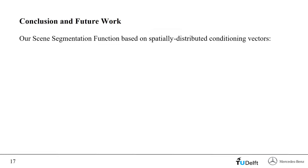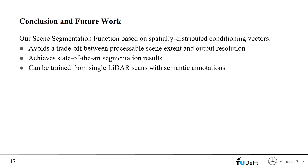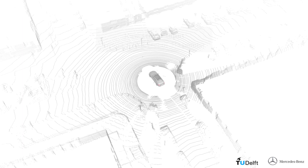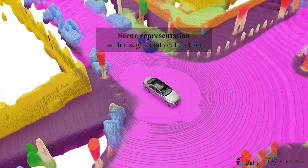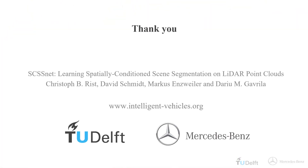In conclusion, the proposed scene segmentation function based on spatially distributed conditioning vectors has several advantages: it avoids a trade-off between processable scene extent and output resolution, achieves state-of-the-art segmentation results, and can be trained from single LiDAR scans together with semantic annotations. Future work involves training the proposed method on time-accumulated LiDAR measurements as a supervision signal for full scene completion. Different levels of sparsity or completely hidden areas could be considered when explicitly modeling statistical uncertainty within the scene completion data. Thank you for watching.